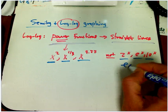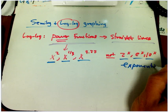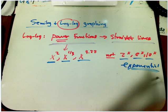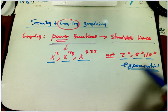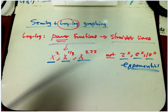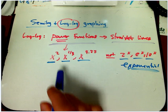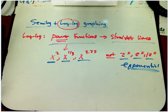x to the x, 10 to the x, those are exponential functions. Those don't show up as straight lines. This is really quite different from semi-log graphing because exponential functions are exactly what do show up as straight lines for semi-log graphing. So it's a really important distinction.